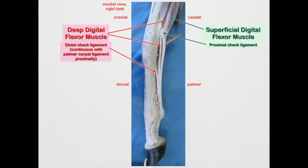Both of these are very important. When the animal is bearing weight on the limb, the muscles will not be in tension, and so these check ligaments are going to keep things in check so we don't get overextension of the fetlock.